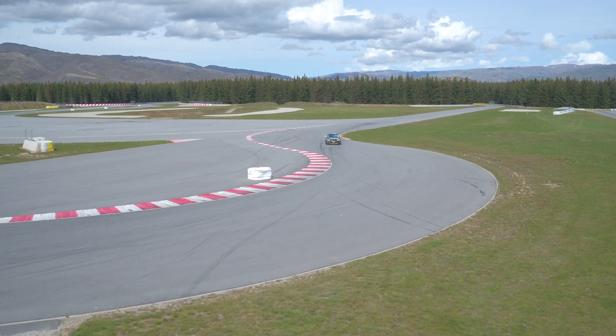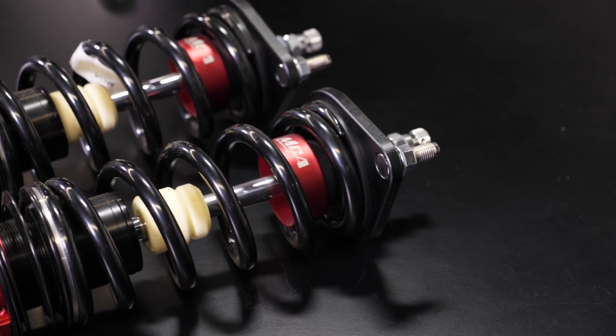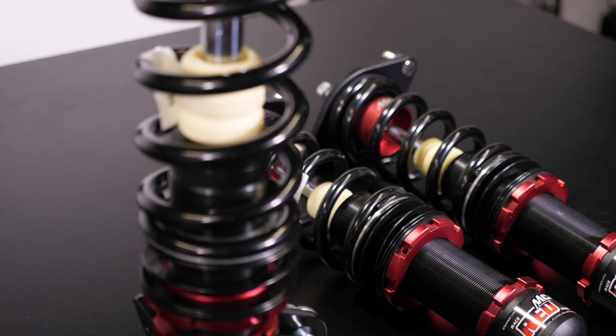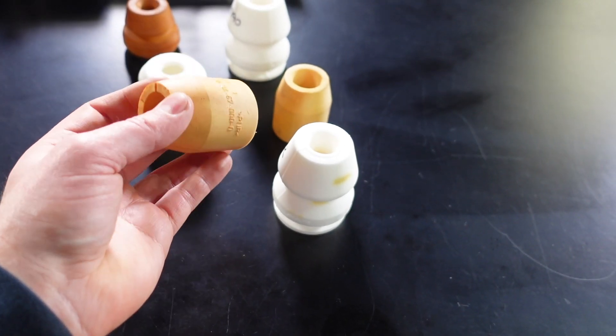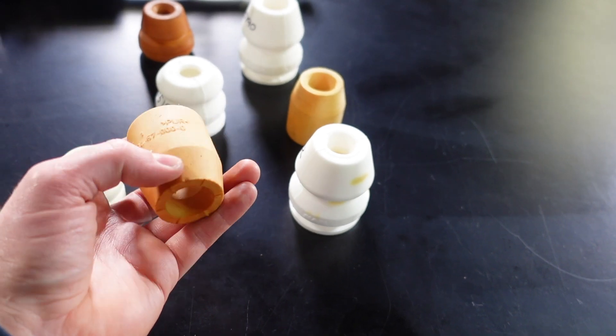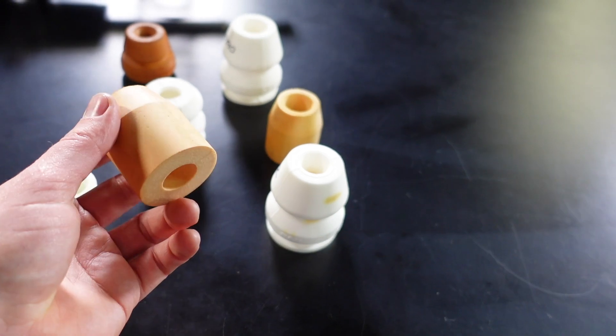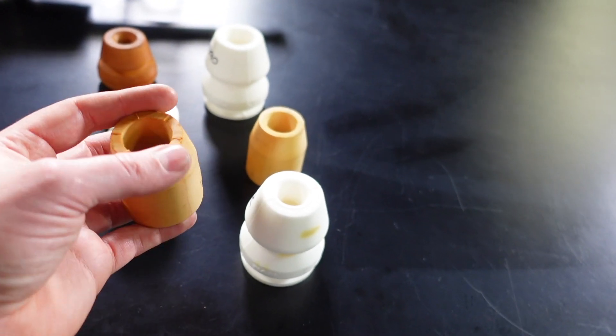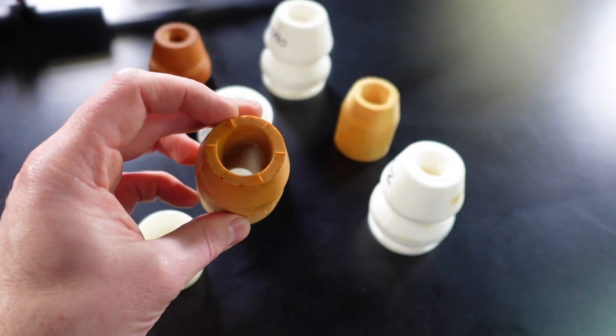The normal function of a bump stop in an OEM or road car application is really just to limit the suspension travel safely to stop suspension components hitting each other when you've got large bumps in the road, say potholes or something like that. It's really just to stop the suspension crashing into itself, damaging suspension arms, dampers, things like that or even the tyre hitting the inside guard.